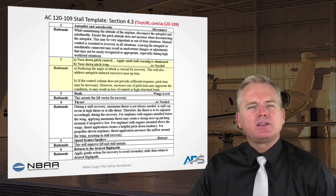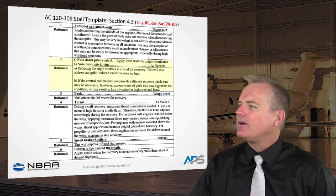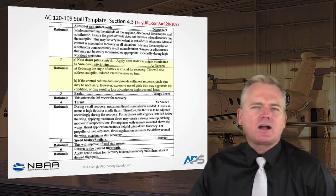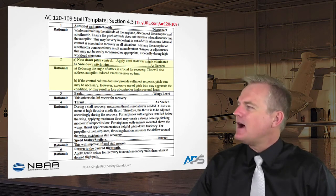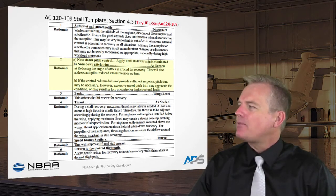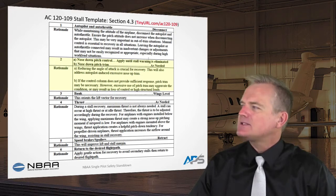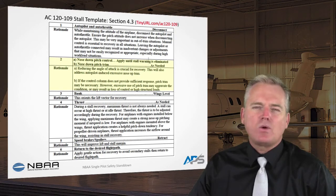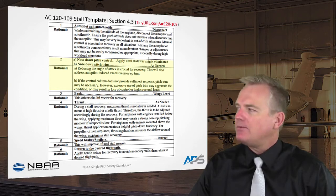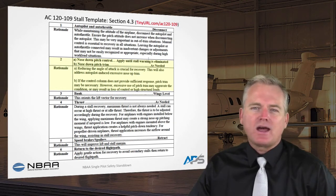Most importantly: minimizing altitude loss is a thing of the past — it still matters, but it is absolutely not the number one priority in stall recovery. Today we're focusing on the highlighted section of the template that addresses reducing angle of attack. For anyone who wants to review the document, type tinyurl.com/ac120-109 into your browser to download it, and then look at the more modern version, which is 109A.